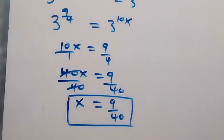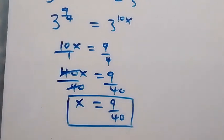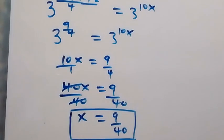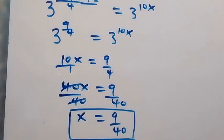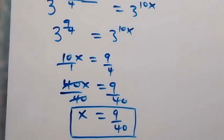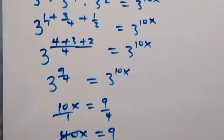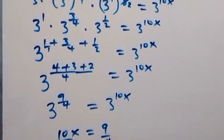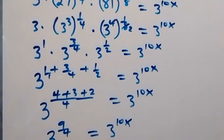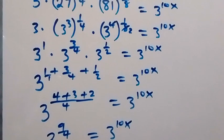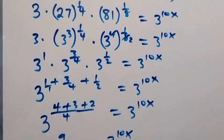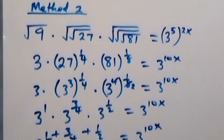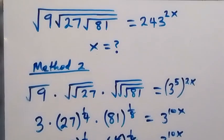Therefore, the answer to the problem is x equals 9 over 40. Thank you for watching — subscribe for more exciting videos, don't forget these steps. You can also share, give it a thumbs up, and comment on this video. Thank you, see you next class, bye for now.